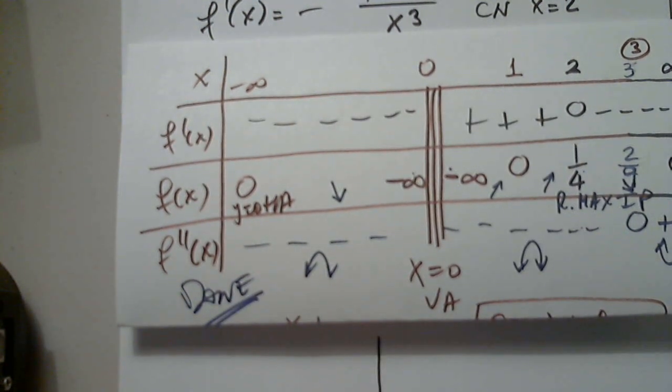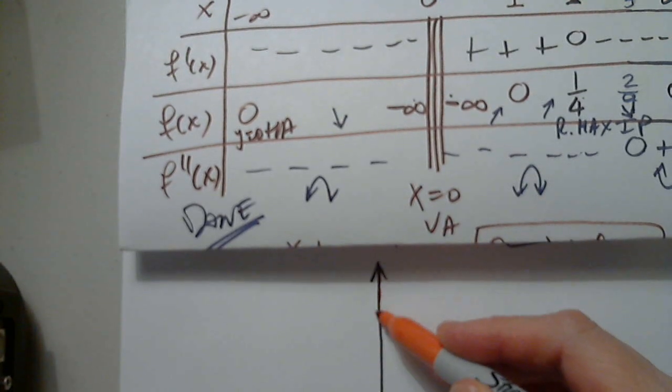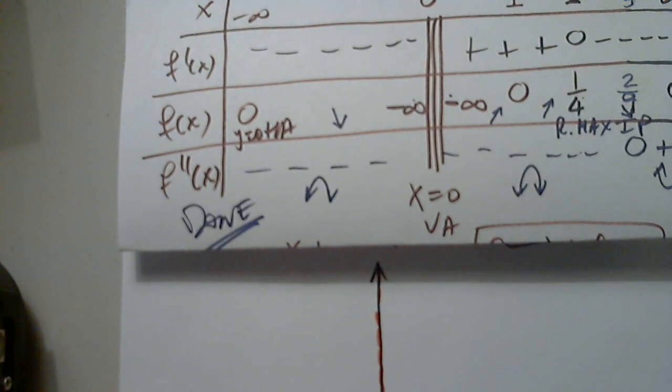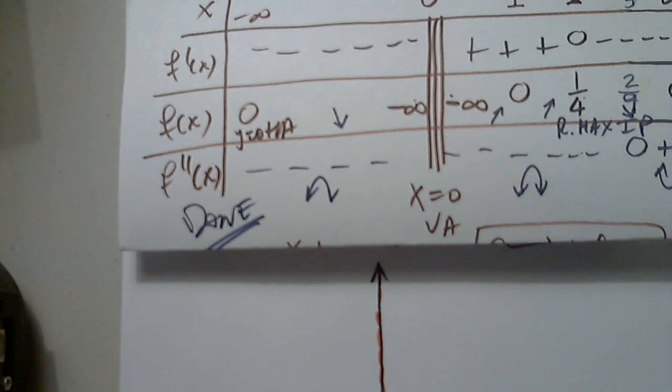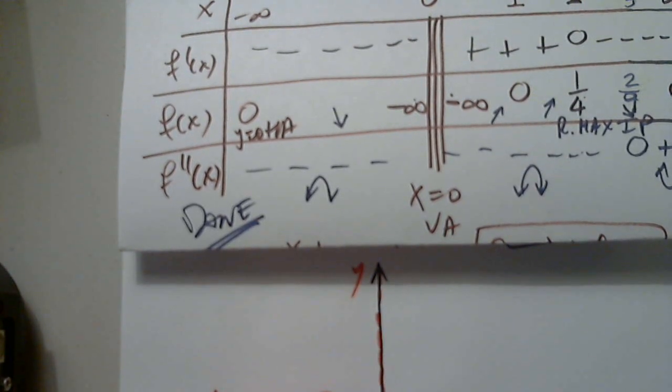When I graph a function with asymptotes, I have to graph the asymptotes first. Well, it's an overkill. Because this is 1. And this is the other. So x equals 0. Y equals 0.